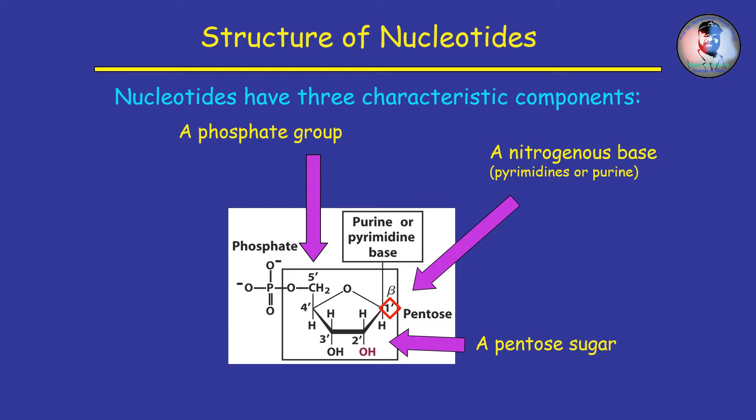Usually, the nitrogenous base is linked to the 1' carbon and the phosphate group attached to the 5' carbon of the pentose sugar to form a nucleotide. Nucleic acids are linear polymers that consist of monomers called nucleotide.